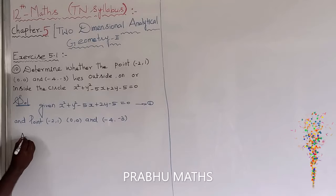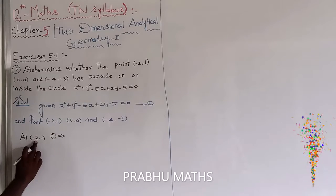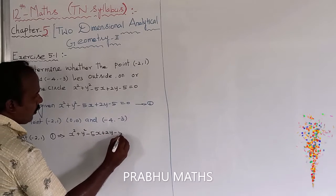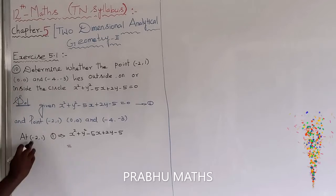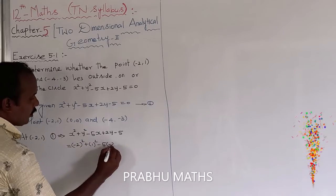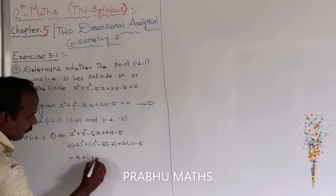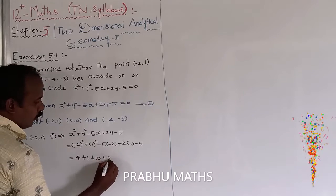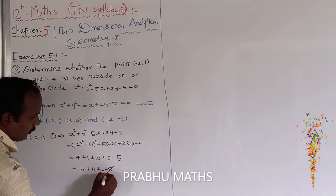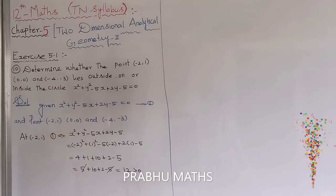Now we replace the values. Equation at the first point minus 2 comma 1 in equation 1: x squared plus y squared minus 5x plus 2y minus 5 becomes (minus 2) squared plus (1) squared minus 5 times (minus 2) plus 2 times 1 minus 5, which equals 4 plus 1 plus 10 plus 2 minus 5, equal to 12. This is greater than 0, so greater than 0 means outside of the circle.